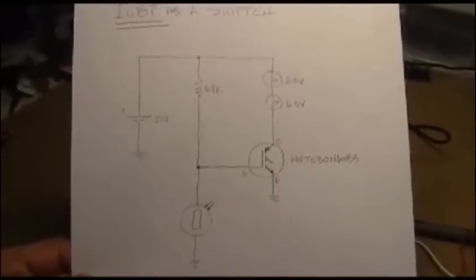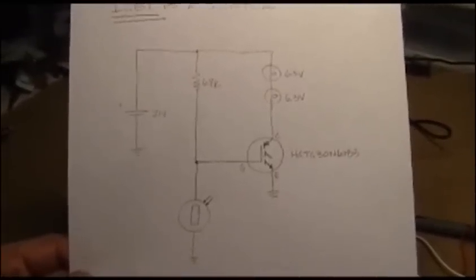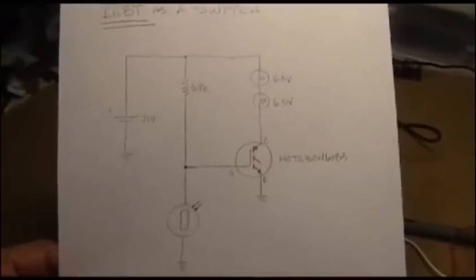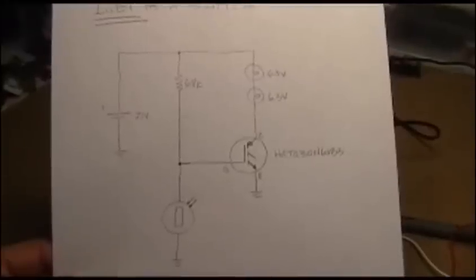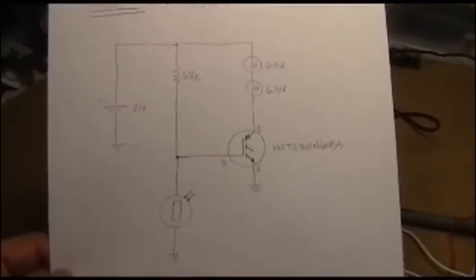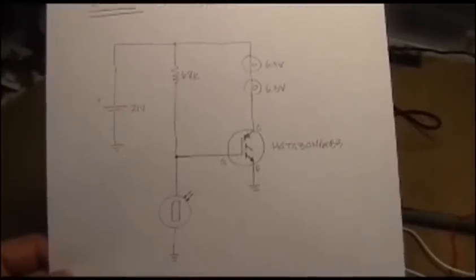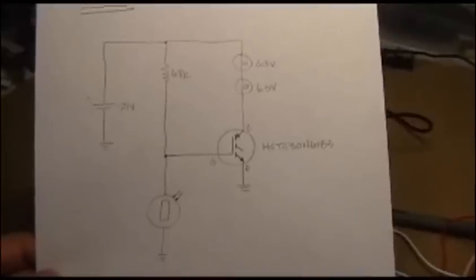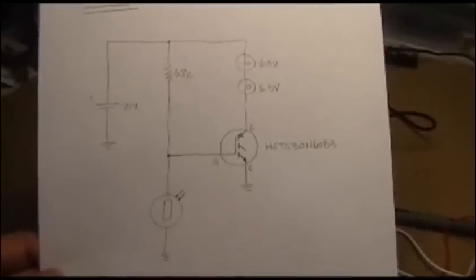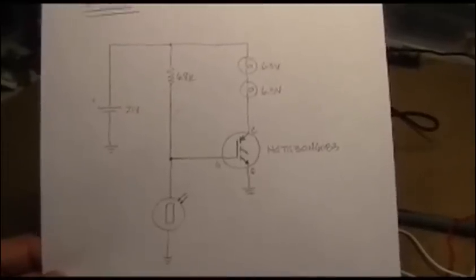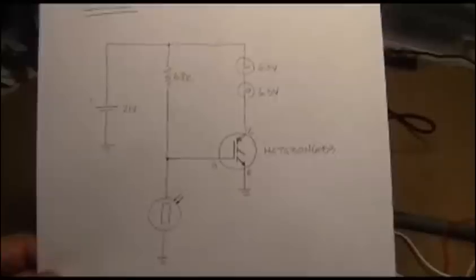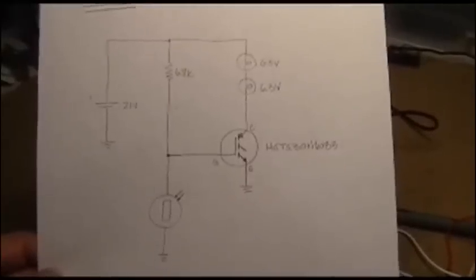The LDR is at the lower end of that, and depending on how much light is falling on it depends on the resistance that it puts together, and therefore that will drive the voltage that's at that junction that is connected to the gate of the IGBT. And of course you see the two lamps in the collector circuit, and then it's connected to ground.